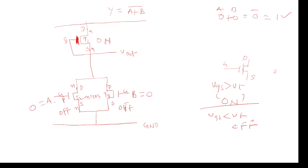T1 is always ON, while T2 and T3 are OFF because there is no sufficient VGS — you can think of it as zero being negative, reverse-biased, so it goes to OFF condition. The pull-down network is in OFF condition, so there is no flow of current from drain to source. VDD flows through transistor T1, and the output is pulled HIGH. So when giving zero-zero input, the output is HIGH (1).